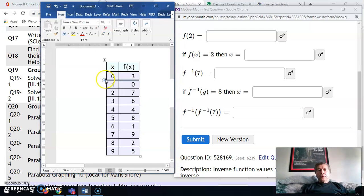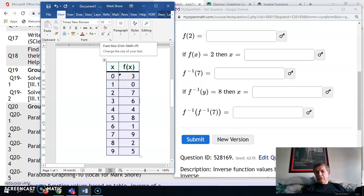Okay, on this problem, we have a table of values in function notation. We have x values going from 0 to 9, and these are their f(x) values, in other words, the y values here. So when x is 0, y is 3, when x is 1, y is 0, and so on.